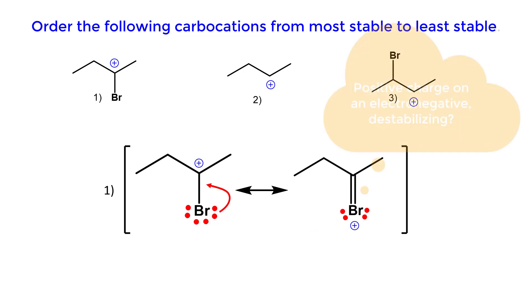You may be thinking that a positive charge on an electronegative atom would be destabilizing. However, in most cases, resonance with the halogen has a greater influence than inductive effects.